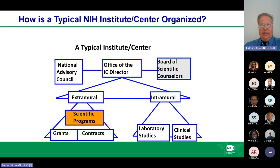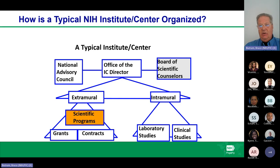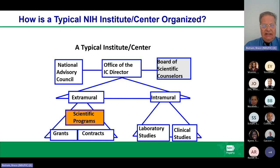A typical NIH institute or center is organized with an office of the director, a national advisory board or council, and sometimes a board of scientific counselors. There's usually an extramural and an intramural department. The extramural department contains scientific programs funded through grants and contracts. The intramural departments are world-class labs at NIH conducting laboratory and clinical studies.